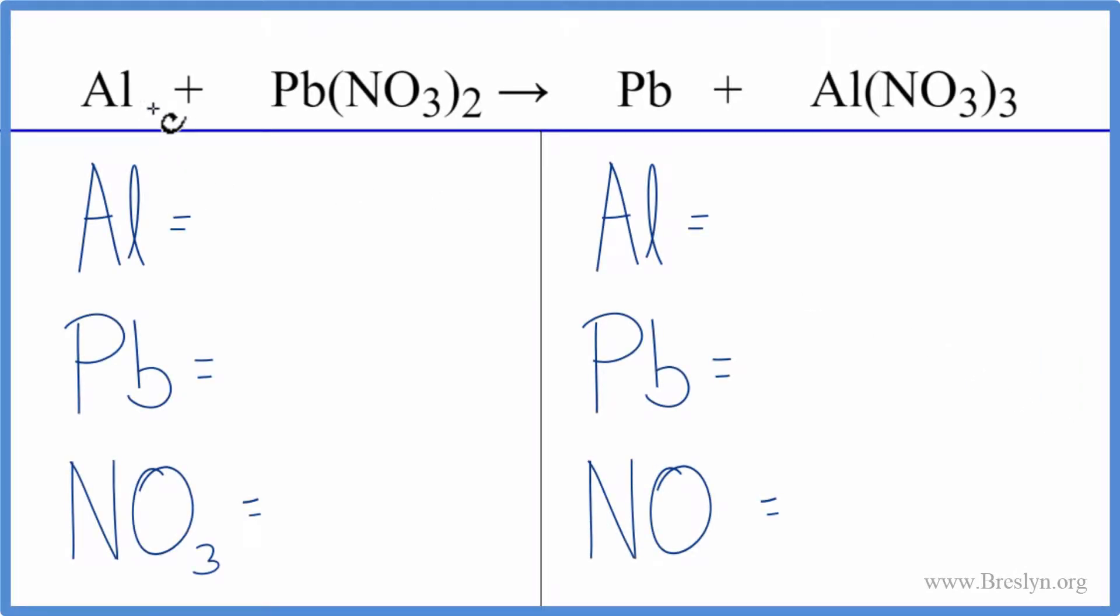To balance this single displacement reaction, aluminum plus lead nitrate, let's count the atoms up on each side.